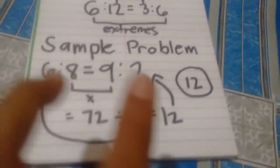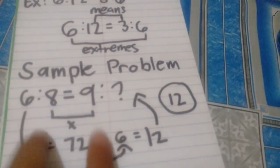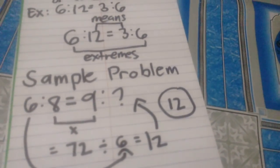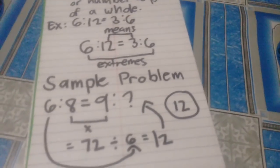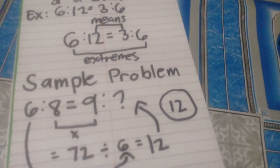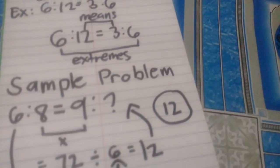When you get the lowest term of these two ratios or proportions, they will get the same lowest term, which is 3 is to 4.